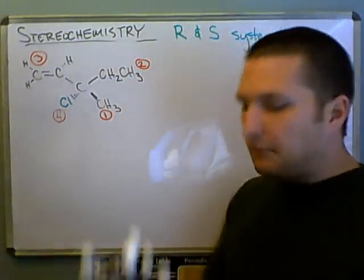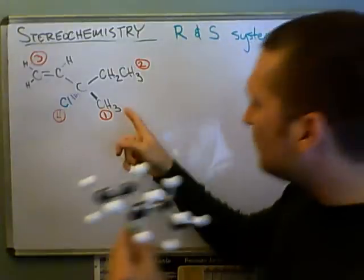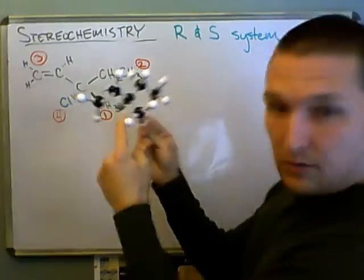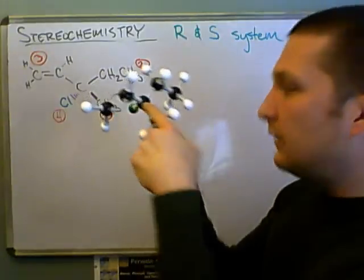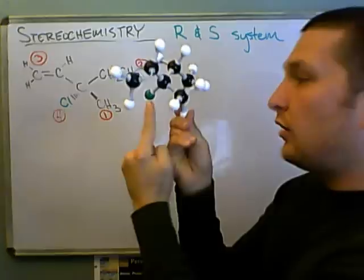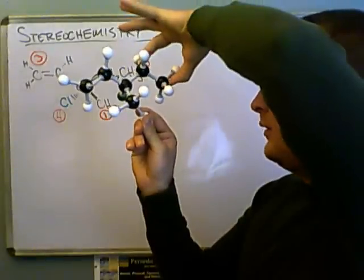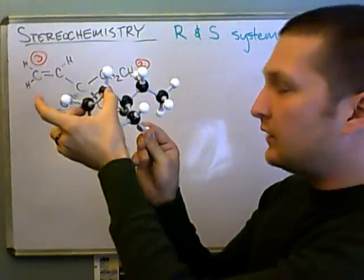Well, if we had a model, if we had built a model like I have of this, we see right here is our chiral center in the middle. There's a chlorine attached to it, a methyl group, an ethyl group, and a vinyl group over here.